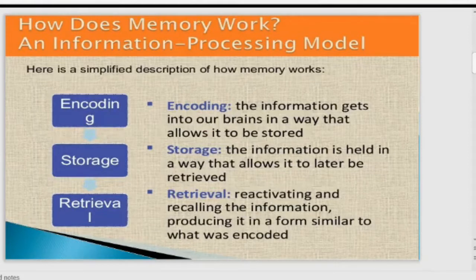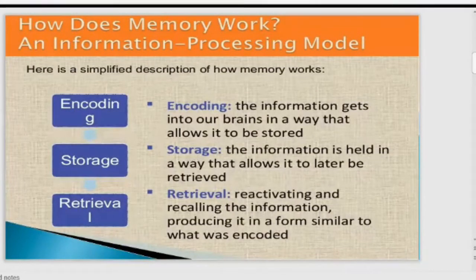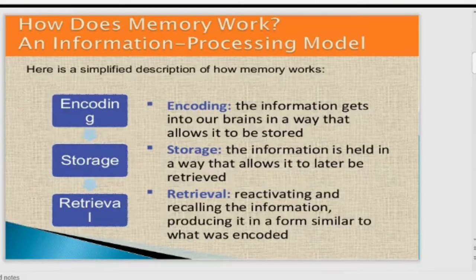Storage is the second process in which information is held in a way that allows it later to be retrieved. Keeping information into your brain is storage. After that, retrieval comes — reactivating and recalling the information, producing it in a form similar to what was encoded. Retrieval is when you need that information and you can easily recall it back from your mind.